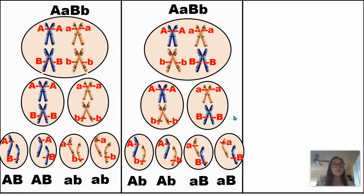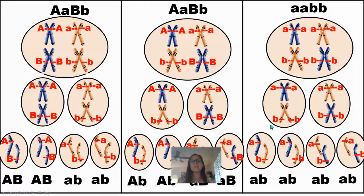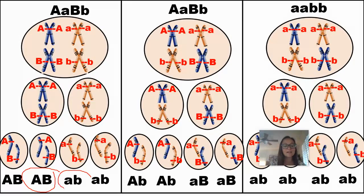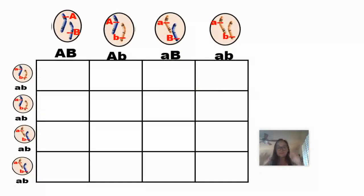If an individual was homozygous recessive for both traits, all of their gametes would only have recessive alleles — no matter how you align them, it's all going to be the same. Now let's see why, when we set up a dihybrid cross, these four genetic combinations are written at the top of that 16-box Punnett square. Those four options come from independent assortment creating haploid gametes.